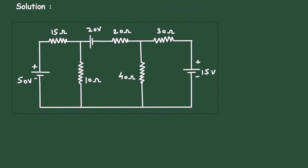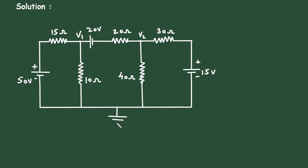First of all, let's consider this is node 1 with voltage V1 and this is node 2 with voltage V2. Now let's assume this is the reference node or ground node with zero voltage.